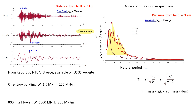Good day everybody. In this video I would like to explain how to read and understand acceleration response spectrum. I'll start with records from the recent earthquake that happened in Turkey last week — it was a very strong earthquake. This data shows peak ground acceleration, velocity, and changes in displacement during the earthquake. It was recorded by a seismograph very close to the fault, about three kilometers away.